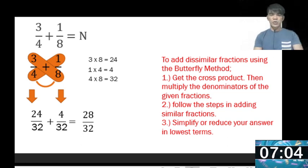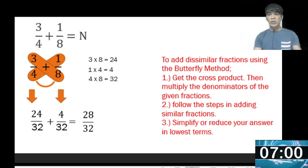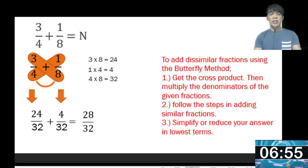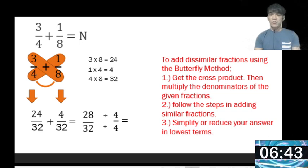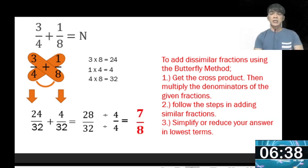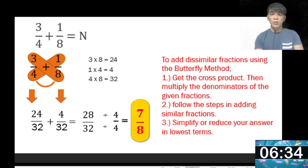28 over 32 is not in lowest terms, so we need to reduce it. We do that by dividing the numerator 28 and the denominator 32 by their GCF. The GCF is 4. So 28 divided by 4 is 7, and 32 divided by 4 is 8. So our final answer is 7 over 8.